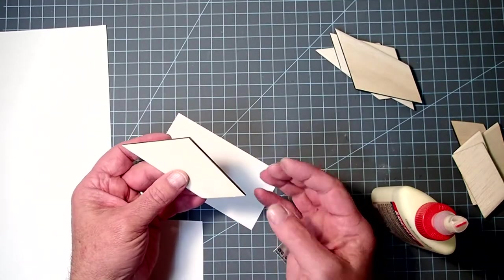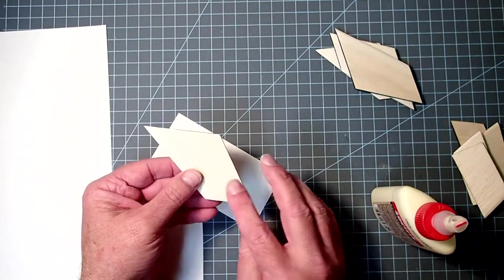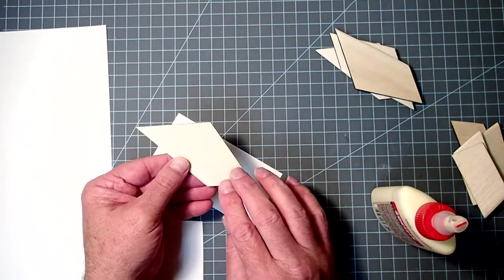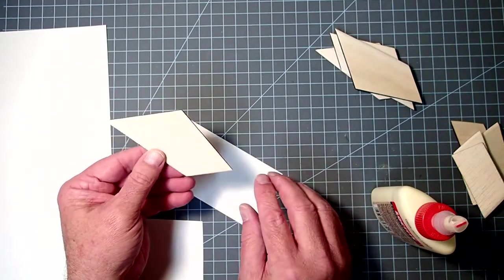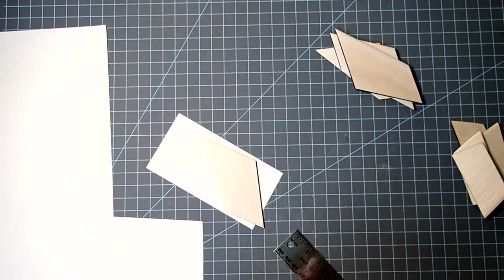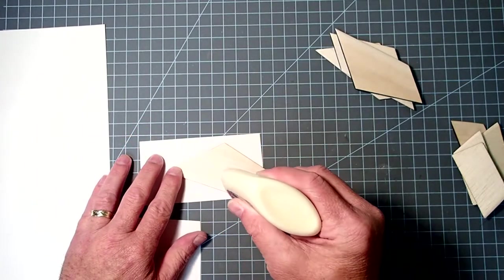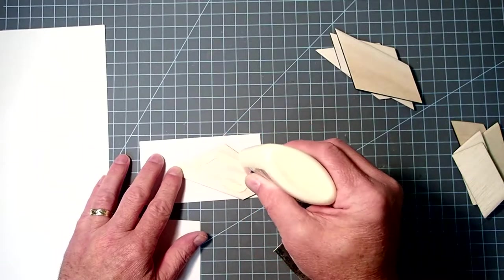Also, if you have any deep gouges, like if you just slip while you're sanding and put a big old fingernail mark or something like that in there, use a little bit of wood filler to fix that gouge before you do the papering here. All right, so now we've got that, I'm going to apply a small amount here. It's going to look like a lot, but it's actually really thin.